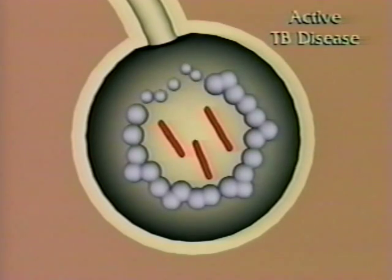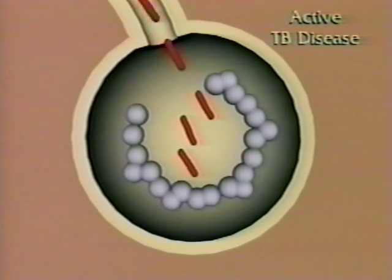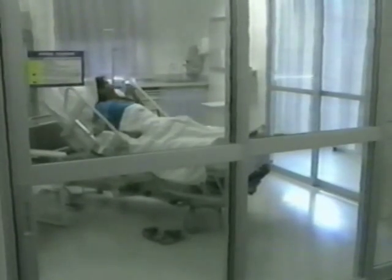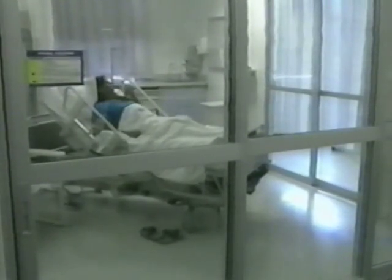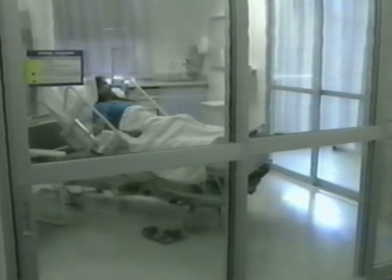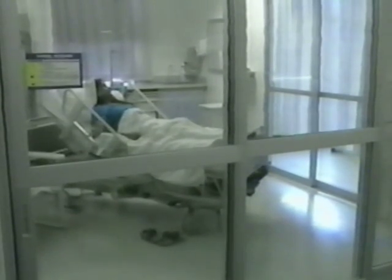The bacteria can become active and multiply, especially if the immune system becomes impaired. The bad news is, approximately 2 million people in the world die each year from active TB disease. The good news is, people who have latent TB infection can get treatment that will prevent the development of active TB disease.